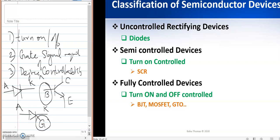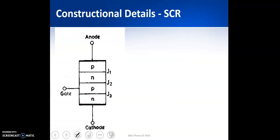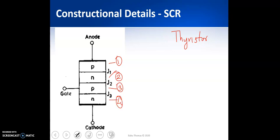Now we will discuss the construction details of a Silicon Controlled Rectifier. An SCR comes under the family of thyristors — thyristor is the generic name given to this family of semiconductor devices. A thyristor is a four-layered PNPN junction device. You can see there are four layers of semiconductor material, which form three junctions: J1, J2, and J3.